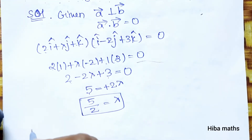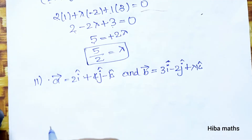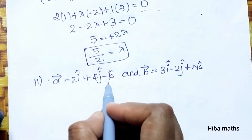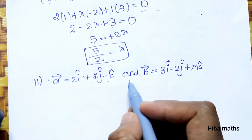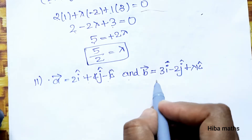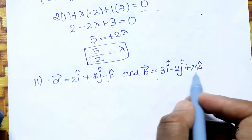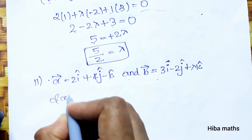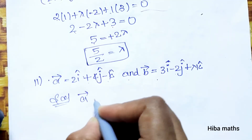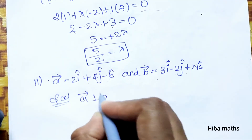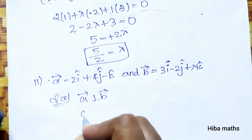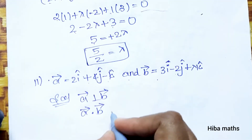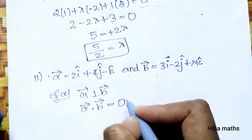Second subdivision: vector a is equal to 2i plus 4j minus k, and vector b is equal to 3i minus 2j plus lambda k. Same condition — vectors a and b are perpendicular, so a dot b equals 0.